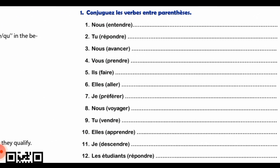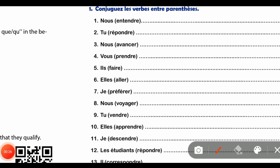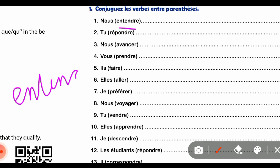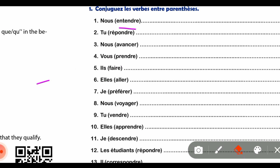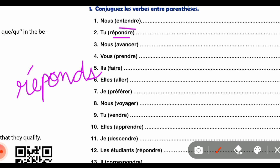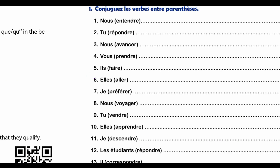Let's come to question number one, where you have to conjugate the given verbs that are in the brackets. I'll give you brief answers to each and every part. Our first verb is 'entendre'. Then part number two which is 'répondre'.